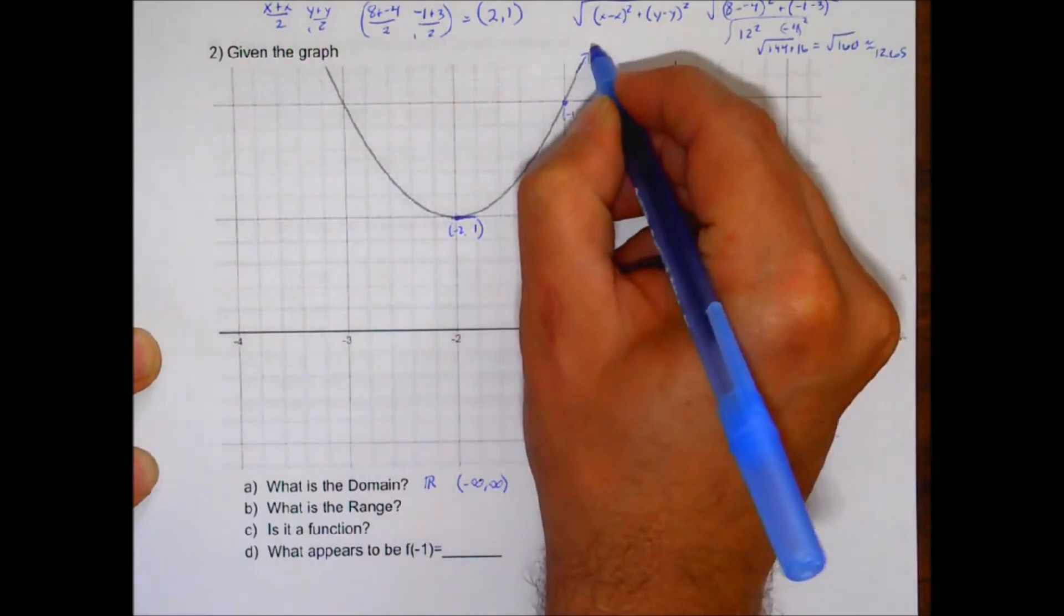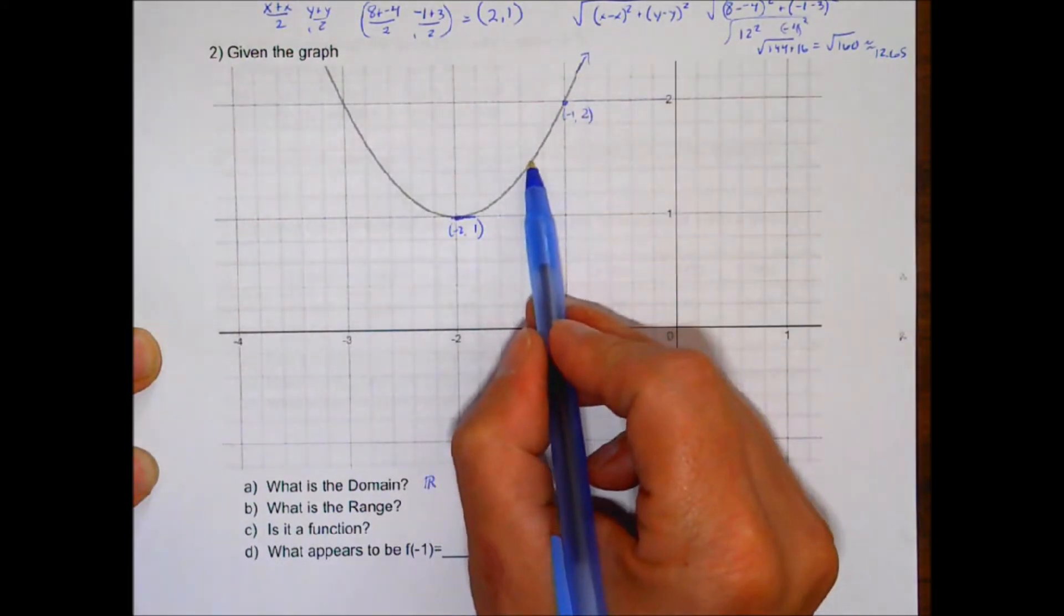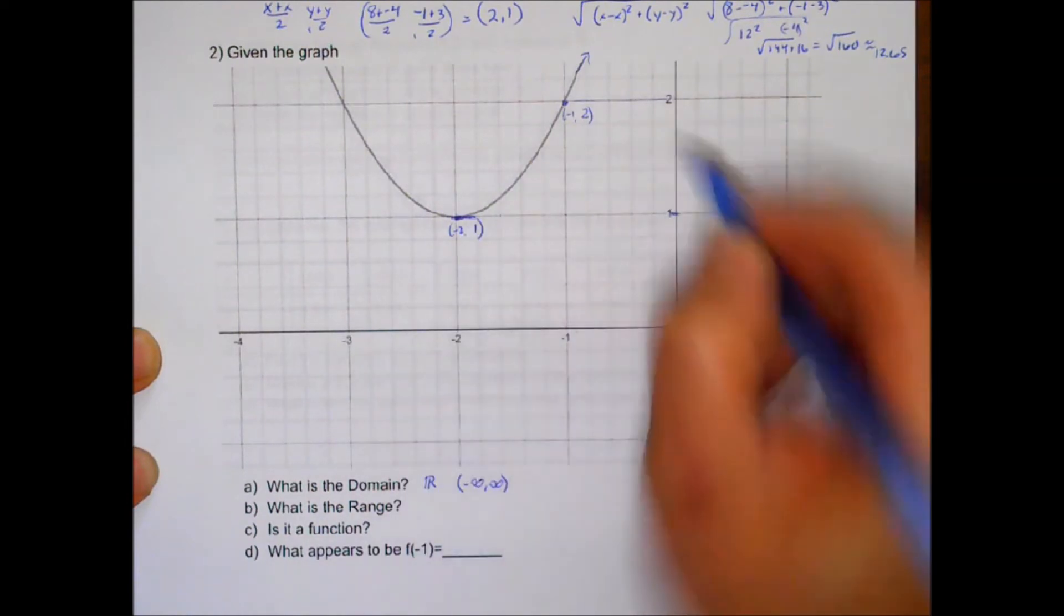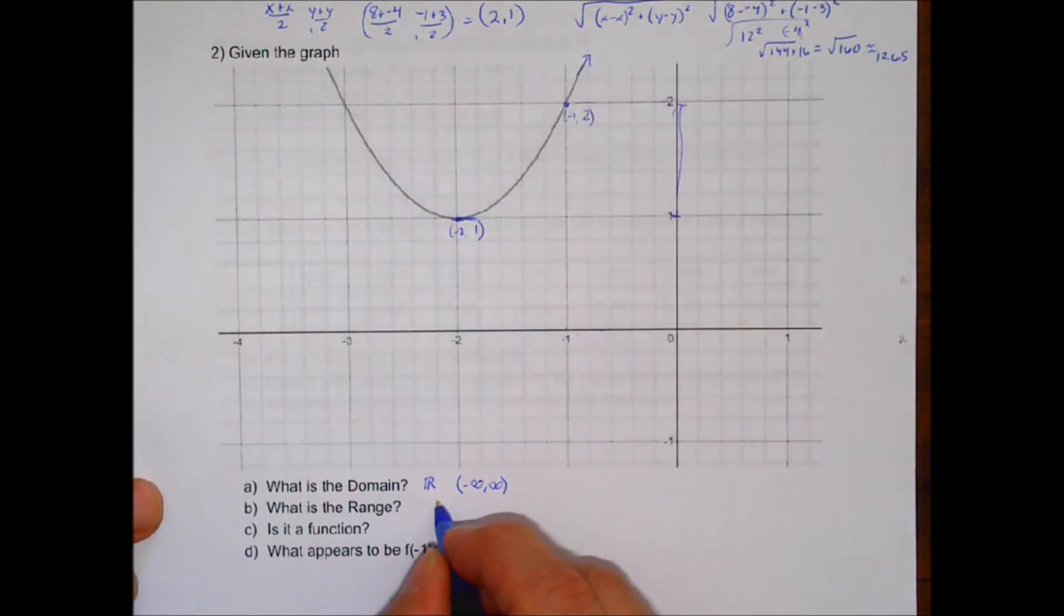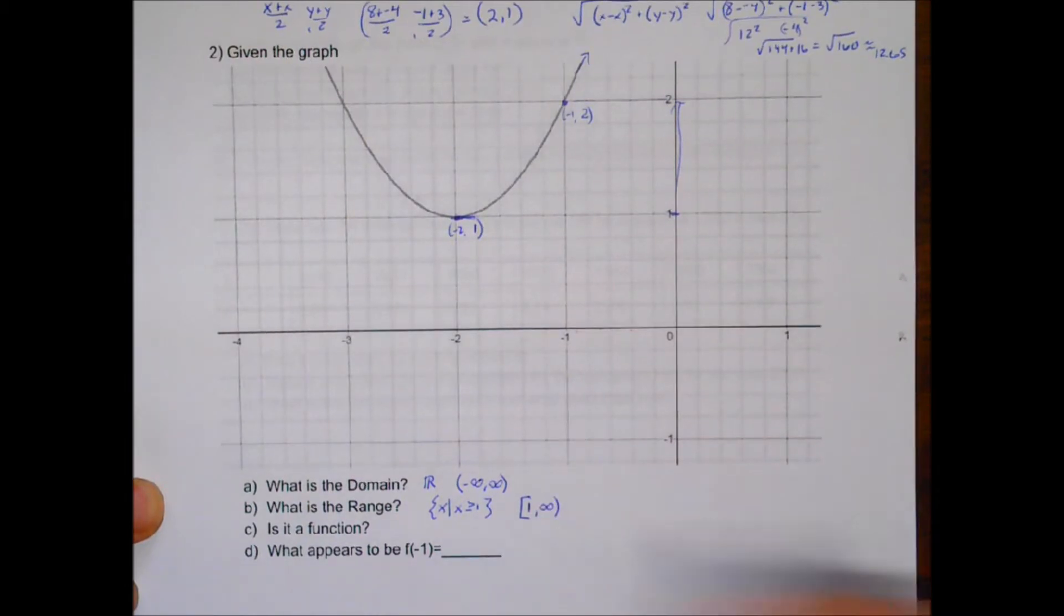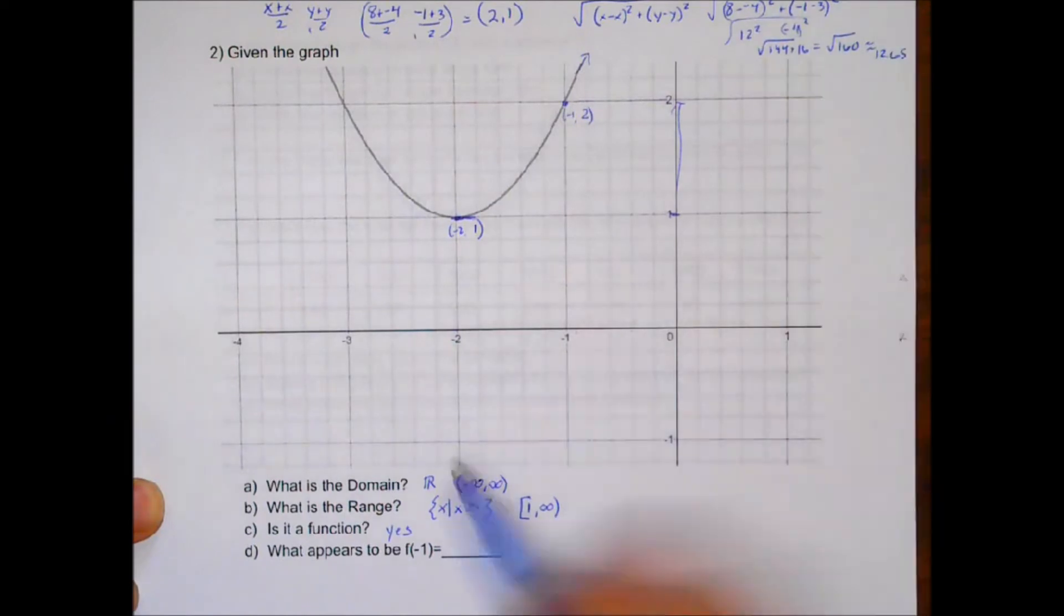We have y around right here is 1.5. So we have all these values from 1 going up through infinity. So we would say either x such that x is greater than or equal to 1, or you could also write it as 1 is included all the way through infinity. And yes, it is a function. Each x only corresponds to 1y. We can use the vertical line test.